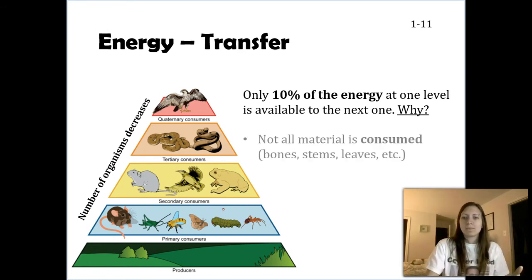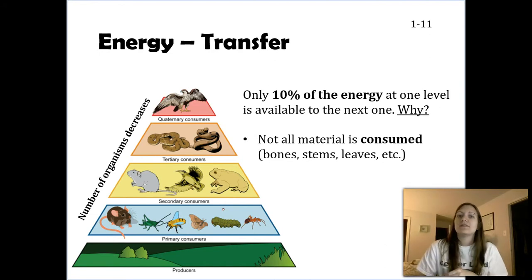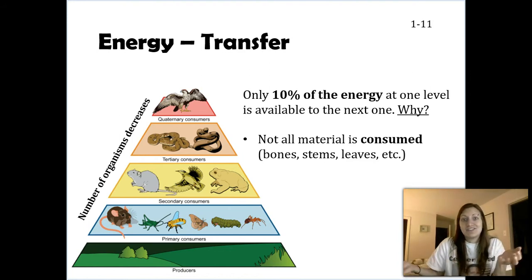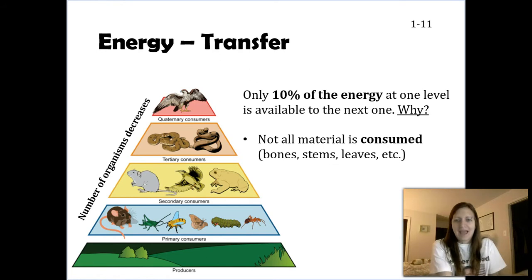Why? One reason, not all the material in an organism is consumed. For instance, this osprey is going to eat a snake. Snakes have bones in them. Osprey aren't going to eat those bones. Or thinking about an insect, this caterpillar is eating the leaves. Might eat the stem too, but it's not going to eat the roots. If it's on a tree, it's not going to eat the bark. Well, the bark has calories in it, I just didn't eat it. The bone has calories in it, I just didn't eat it. So that's one way that we're losing energy.